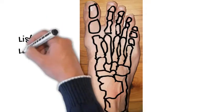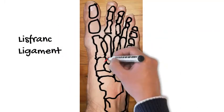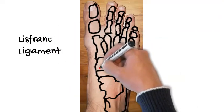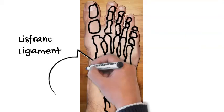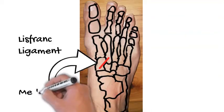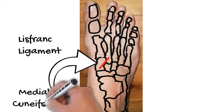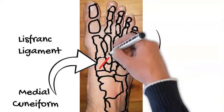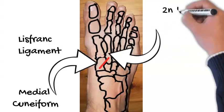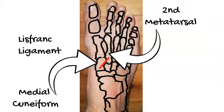So this is just a foot, the bones are drawn on the front, and a Lisfranc injury involves a Lisfranc ligament. A ligament is like a rope between the bones, and this rope lies between a bone called the medial cuneiform on the big toe side of your foot and another bone called the second metatarsal, which is one of the many bones in your foot.